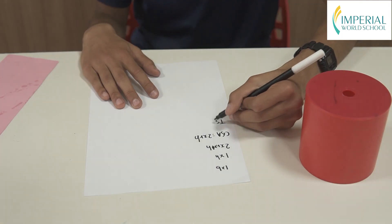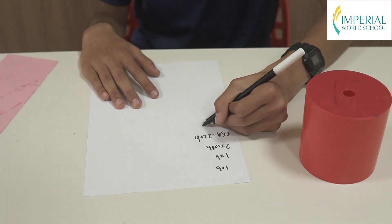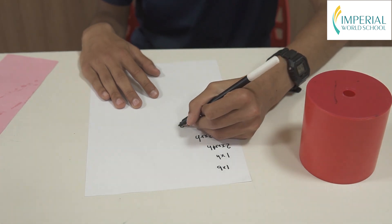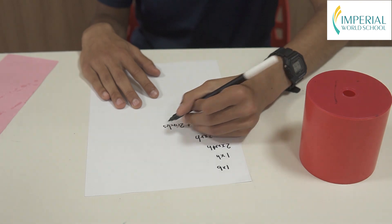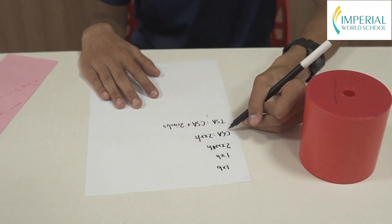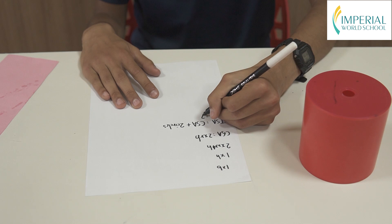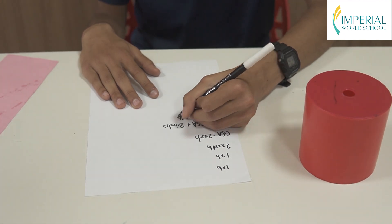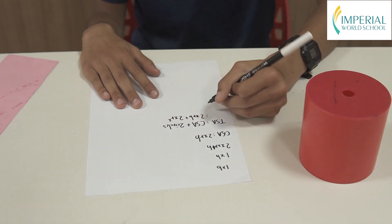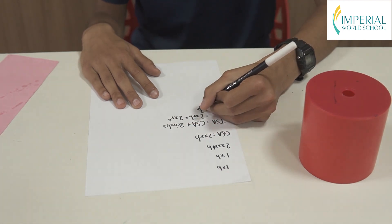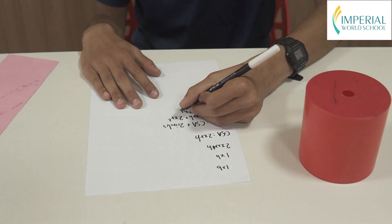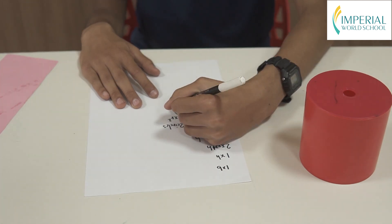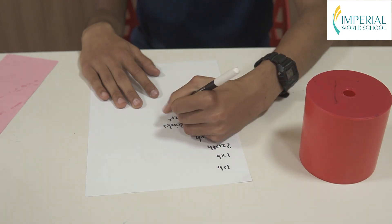Adding all three areas, we can find the total surface area of the cylinder. Total surface area equals the curved surface area plus the area of two circles. The curved surface area is 2πRH and the area of two circles is 2πR². Taking 2πR common, we get 2πR(H + R). So this is the total surface area.